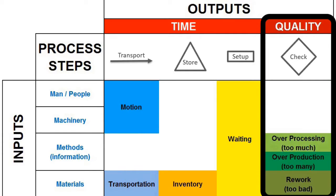Three are quality related at the check process step. If too much quality is made, the waste of over-processing appears. If too many parts are made, the waste of over-production appears. If the part is too bad, below specifications, the waste of rework appears.